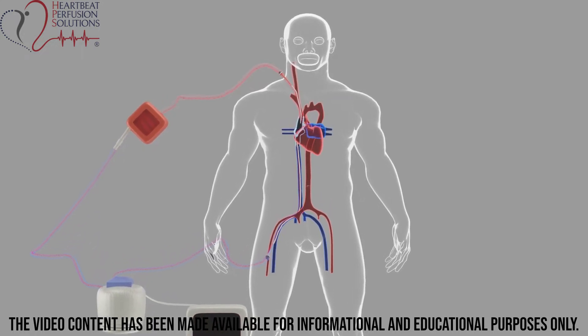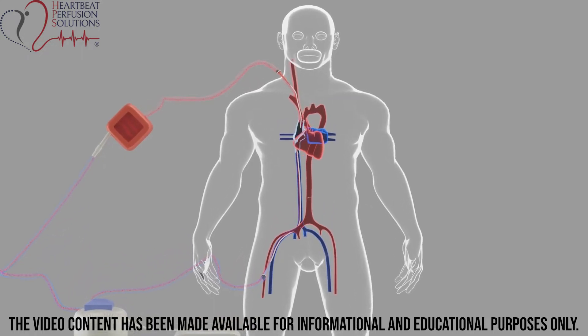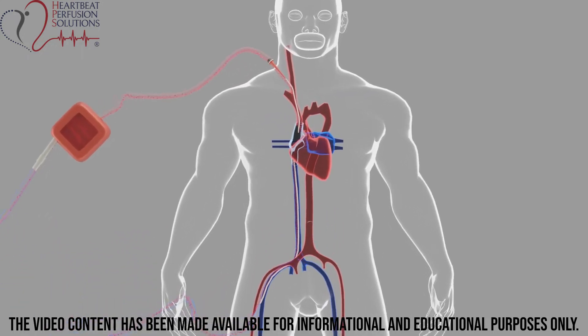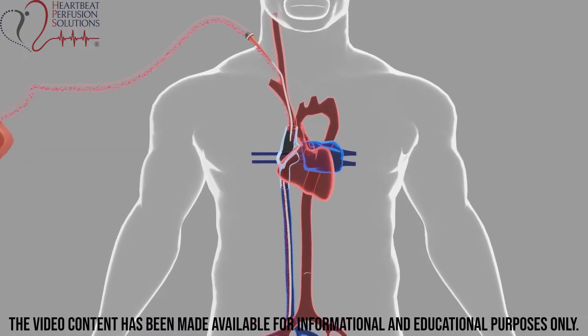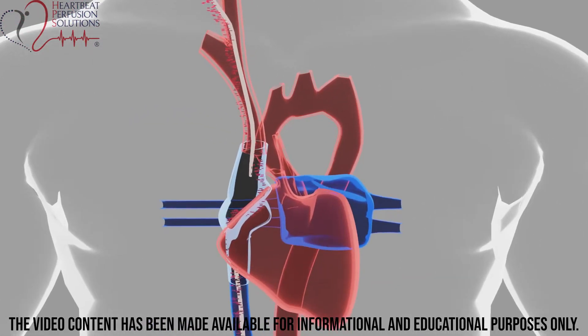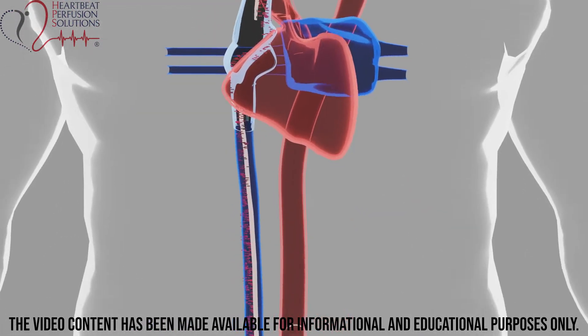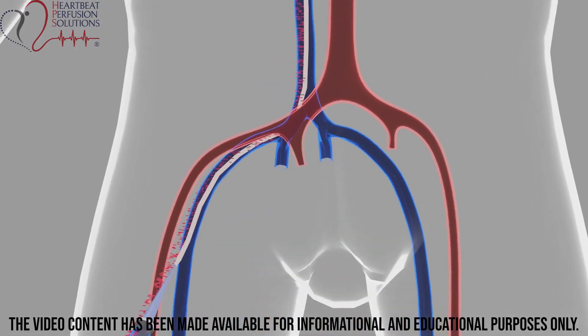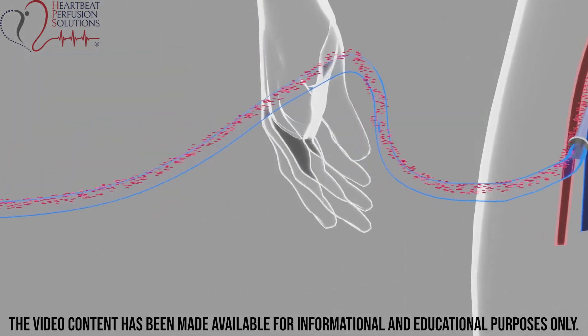In veno-venous ECMO, deoxygenated blood is drained from the venous system, oxygenated by an extracorporeal membrane lung, and subsequently returned to the venous system.